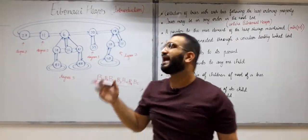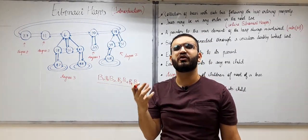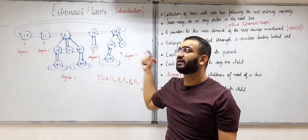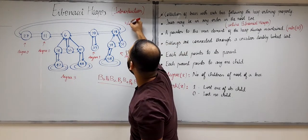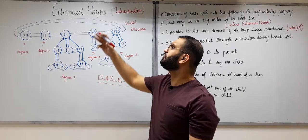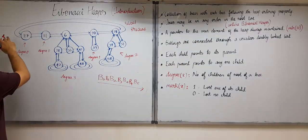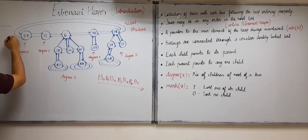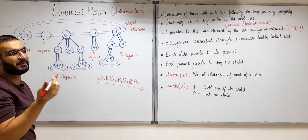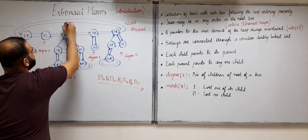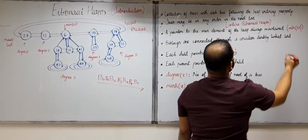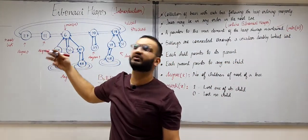So the Fibonacci heap has a more relaxed structure. Apart from that, a pointer to the minimum element of the heap is always maintained. In a binomial heap, to find the minimum element we needed to traverse the entire root list. But in a Fibonacci heap, we maintain a pointer — represented as minimum of H — always pointing to the minimum element. So we can find it in constant time, O(1). If the current minimum element gets deleted, this pointer will update to the new minimum element.